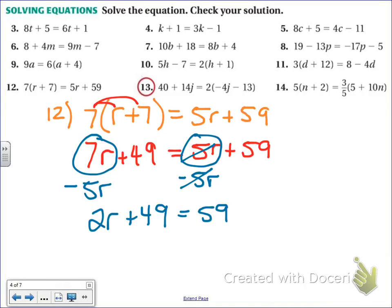So if I'm going to have my variables on the left, that means my other numbers or my other like terms need to go on the right. So 59 and 49 are like terms. So let's subtract 49. And I'm going to get 2r equals 59 minus 49 is 10.